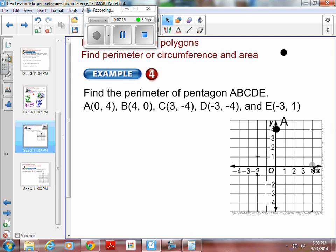4, 0 is out 4 and up 0, and that is B. 3, negative 4. 3, negative 4 is down here. So there is point C. Negative 3, negative 4 is right here. So there is point D. And negative 3, 1 is right there, and that is E.